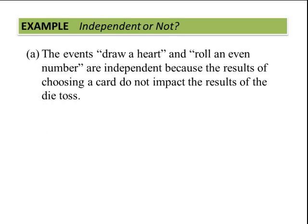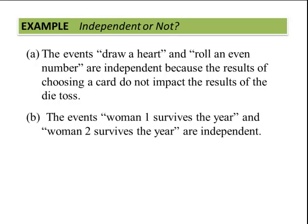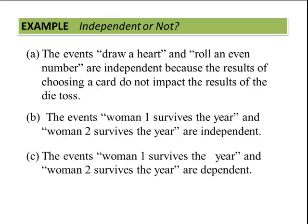The events drawing a heart and rolling an even number are independent because the results of choosing the card do not impact the results of the die toss. The events woman number one survives the year and woman number two survives the year are independent. The events woman number one survives the year and woman number two survives the year are dependent.